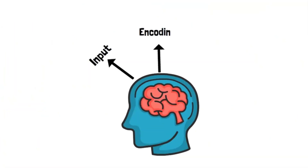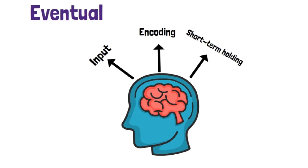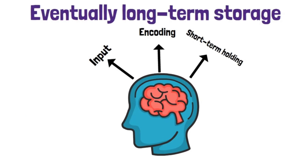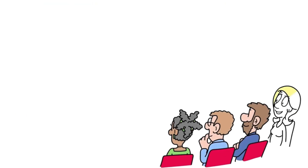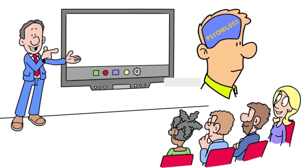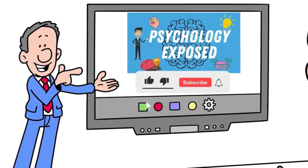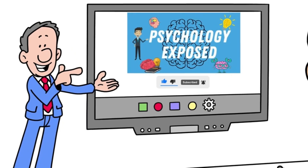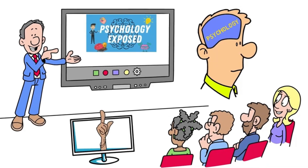The flow from input to encoding, short-term holding, and eventually long-term storage illustrates the brain's sophisticated system for managing memory. If you learned something new about how psychology affects our daily lives, consider subscribing to my YouTube channel so that you don't miss the next episode. Until next time, stay sharp!